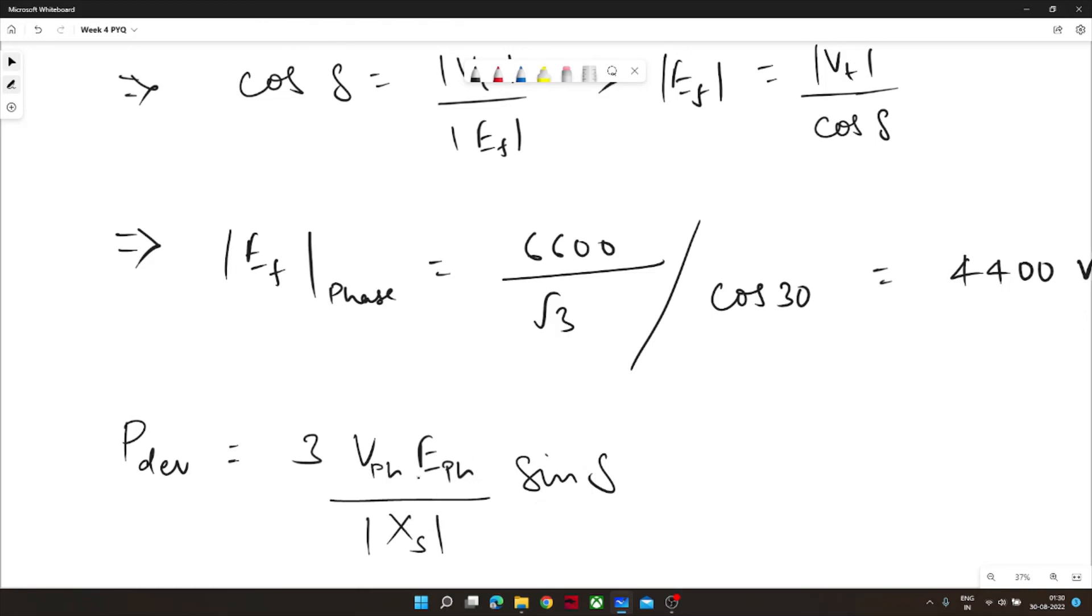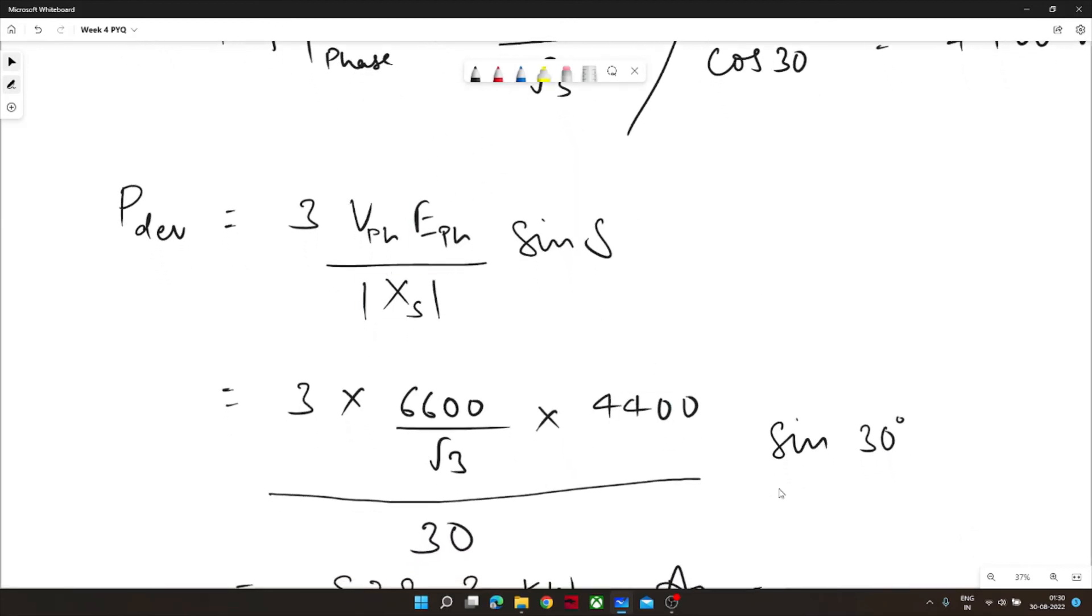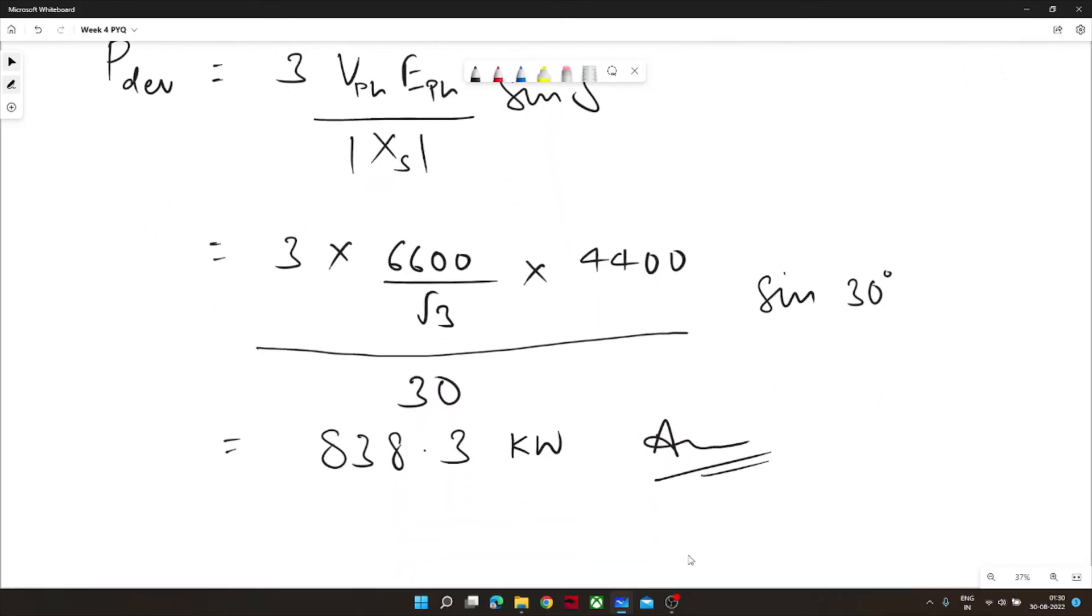If you will take line value you should not take three since it will be V_L and E_L divided by X_s sin delta. Now I have put all the values in this equation and I have achieved 838.3 kilowatt and that was the answer for this question.